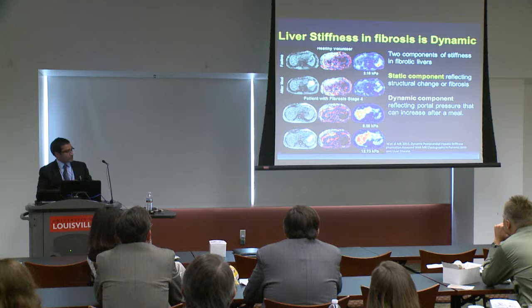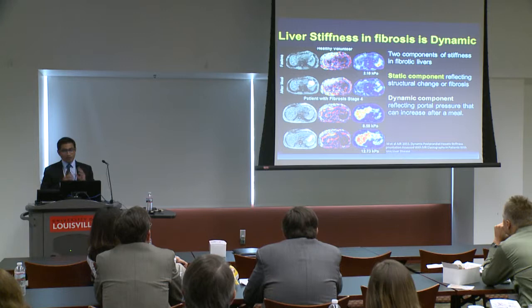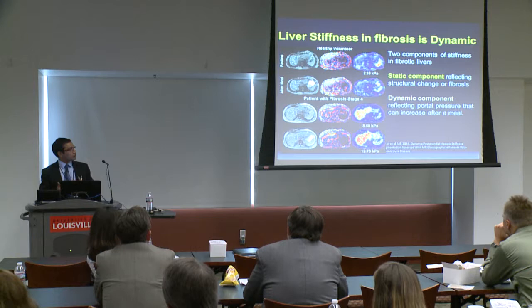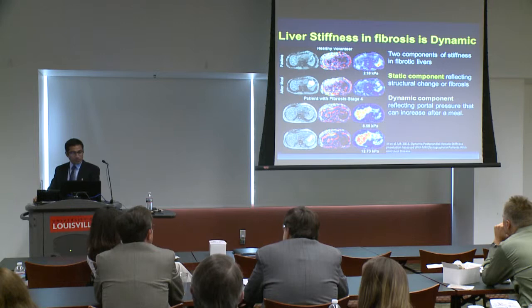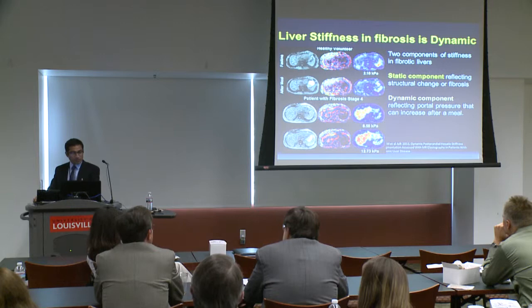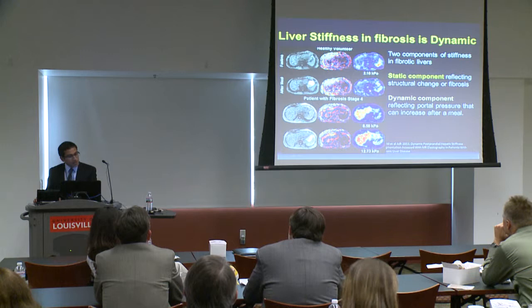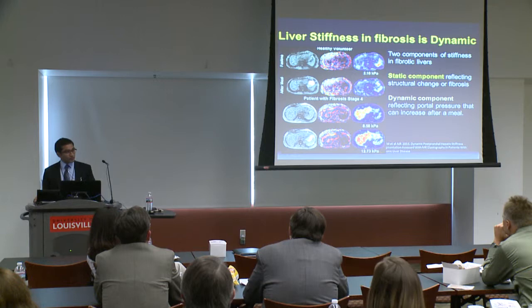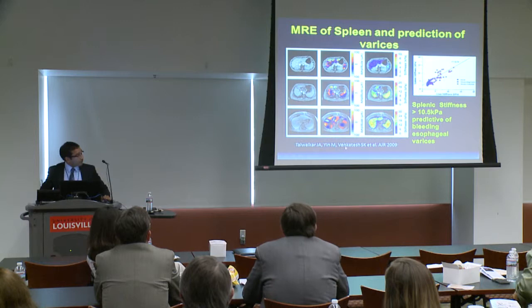Liver stiffness is also dynamic, not just static. When you eat food about 30 minutes after a high sugar or fructose meal, it increases blood flow to the liver. In a normal liver this does not cause any change in stiffness, whereas in a fibrotic liver it cannot accommodate the increased blood flow, so stiffness increases. A healthy volunteer showed no difference in stiffness after a meal challenge, while a cirrhosis patient's stiffness increased from 8.5 to 12.7 kilopascals. There is both a structural and a vascular component to stiffness, especially active in fibrotic livers.